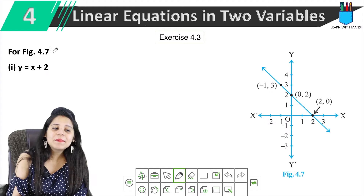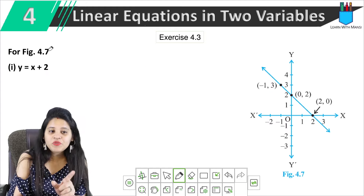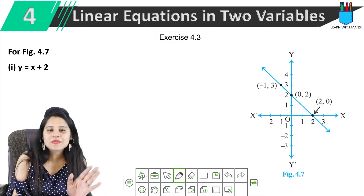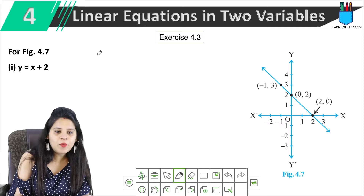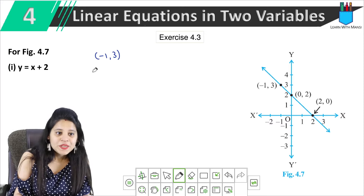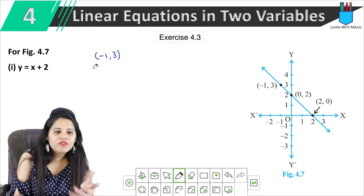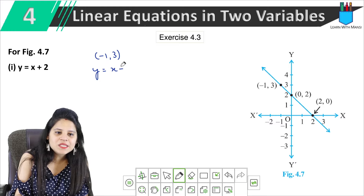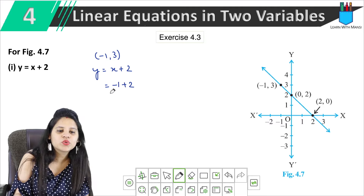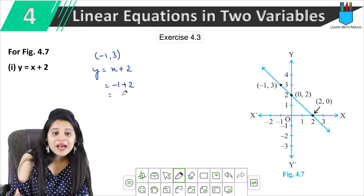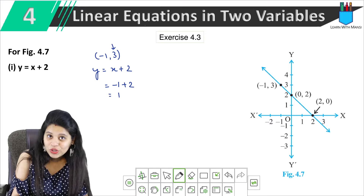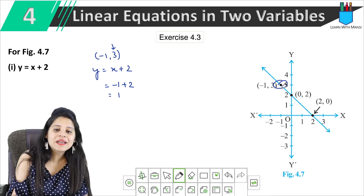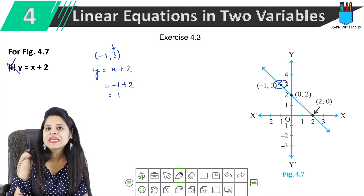Now we move to figure 4.7. The first equation is y equals to x plus 2. We take the point (-1, 3) and put the values: y equals minus 1 plus 2, which gives 1. But y is 3, not 1. That means the first point is not satisfied, so this equation cannot be the graph.